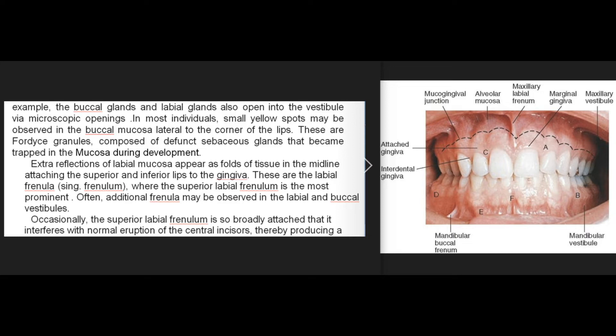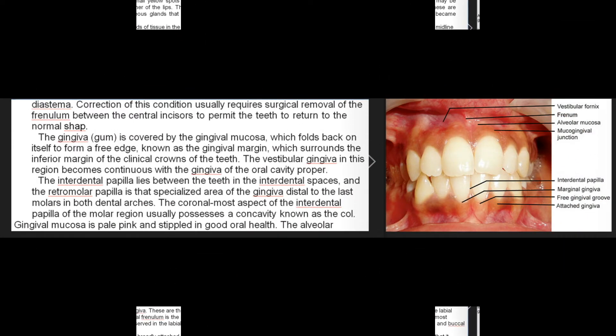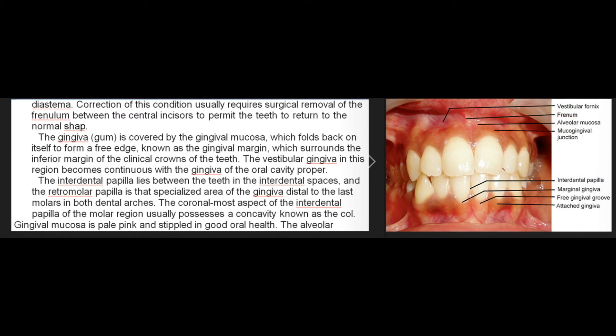Occasionally the superior labial frenulum is so broadly attached that it interferes with normal eruption of the central incisors, thereby producing a diastema. Correction of this condition usually requires surgical removal of the frenulum between the central incisors to permit the teeth to return to normal alignment. The gingiva (gum) is covered by the gingival mucosa, which folds back on itself to form a free edge known as the gingival margin, surrounding the inferior margin of the clinical crowns of the teeth.